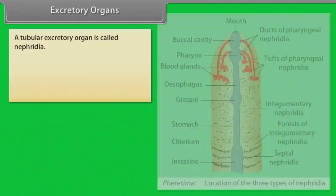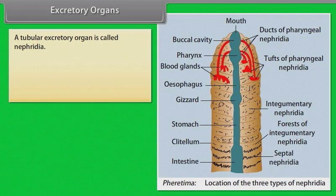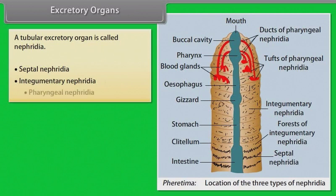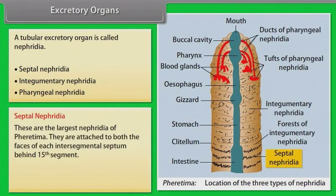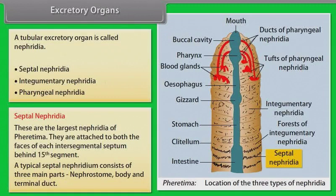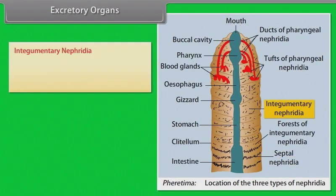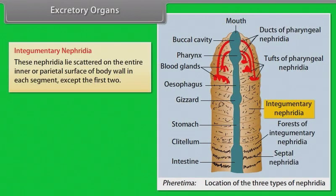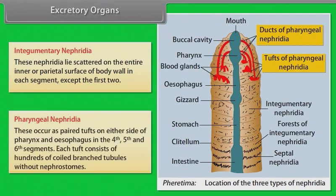Excretory Organs. A tubular excretory organ is called nephridium. It is of three types: septal, integumentary and pharyngeal. Septal nephridia are the largest nephridia of Ferratima. They are attached to both faces of each intersegmental septum behind the fifteenth segment. The typical septal nephridium consists of three main parts: nephrostome, body and terminal duct. Integumentary nephridia lie scattered on the inner parietal surface of body wall in each segment except the first two. Pharyngeal nephridia occur as paired tufts on either side of pharynx and oesophagus in the fourth, fifth and sixth segments, each tuft consisting of hundreds of coiled branched tubules without nephrostomes.